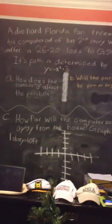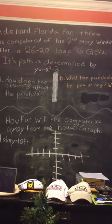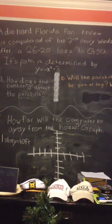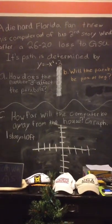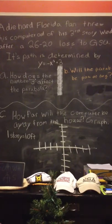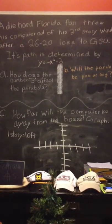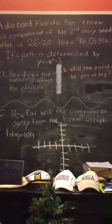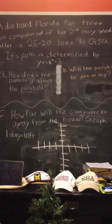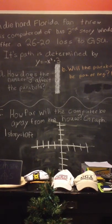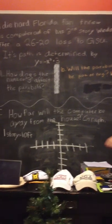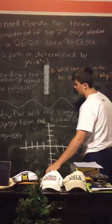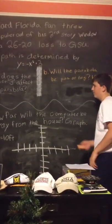Fun with parabolas. A die-hard Florida fan threw his computer out of his third-story window after a 26-20 loss to Georgia Southern. Its path is determined by y equals negative x squared plus 3. We're going to answer three questions for this problem.